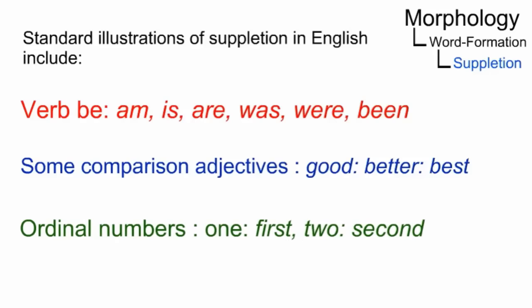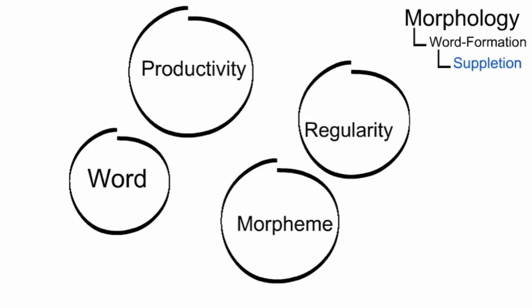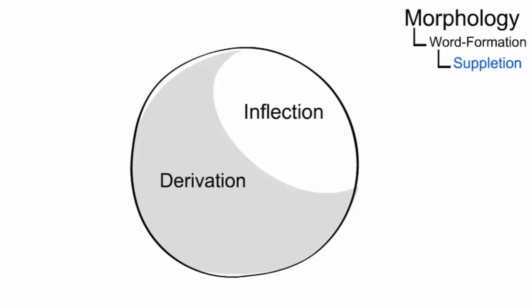Defining suppletion is more complicated than it may seem. Pertinent issues concern long-debated theoretical notions such as word, morpheme, regularity, productivity, and the dichotomy between derivation and inflection.